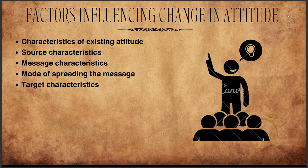Next is message characteristics. Message is the information presented in order to bring about an attitude change. Whether the message contains a rational or emotional appeal makes a difference, and the motive of the message also determines the possibility of change — what you say and how you say it matters. Next is mode of spreading the message. Face-to-face transmission is usually more effective than indirect transmission through letters, pamphlets, or mass media.